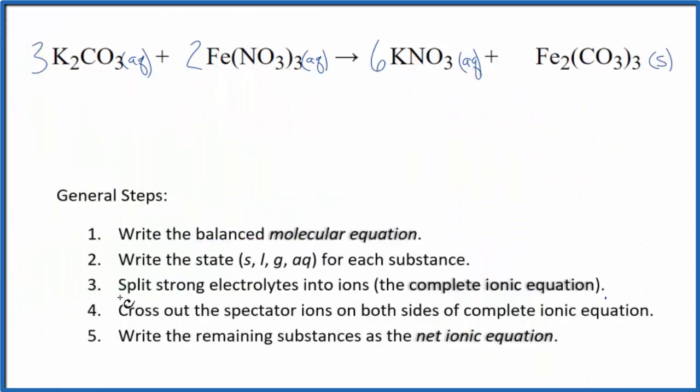Now we can split the strong electrolytes into their ions for the complete ionic equation. Potassium is in group one on the periodic table, has a one plus charge, and the whole carbonate is two minus. So we have three times two, six potassium atoms, aqueous, and then I have three carbonate ions CO3 two minus.